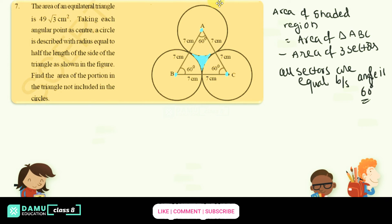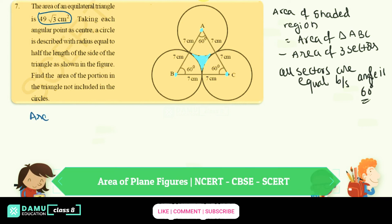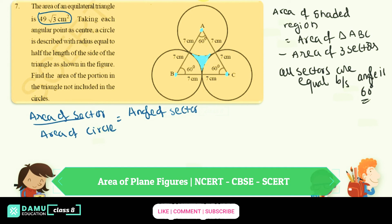First, we are going to find the area of each sector, then we'll move on. The formula for a sector is: area of sector divided by area of circle equals angle of sector divided by total angle. So, area of sector (AS) divided by area of circle (AC) equals X degrees divided by 360. Therefore, area of sector = (X/360) × πr².